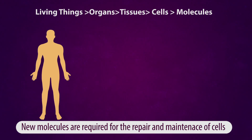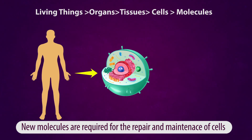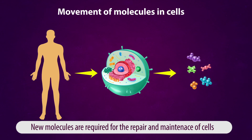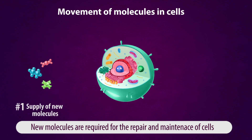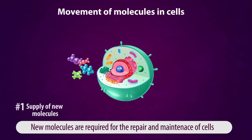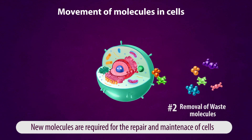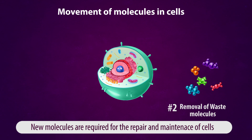All living things are made up of cells, and cells are made up of molecules. To keep a cell alive, it needs to be maintained well and repaired from time to time. For this repair and maintenance, two things are to be done: supply of new materials, and removal of waste and unwanted materials from the cells. These two tasks are achieved by life processes.